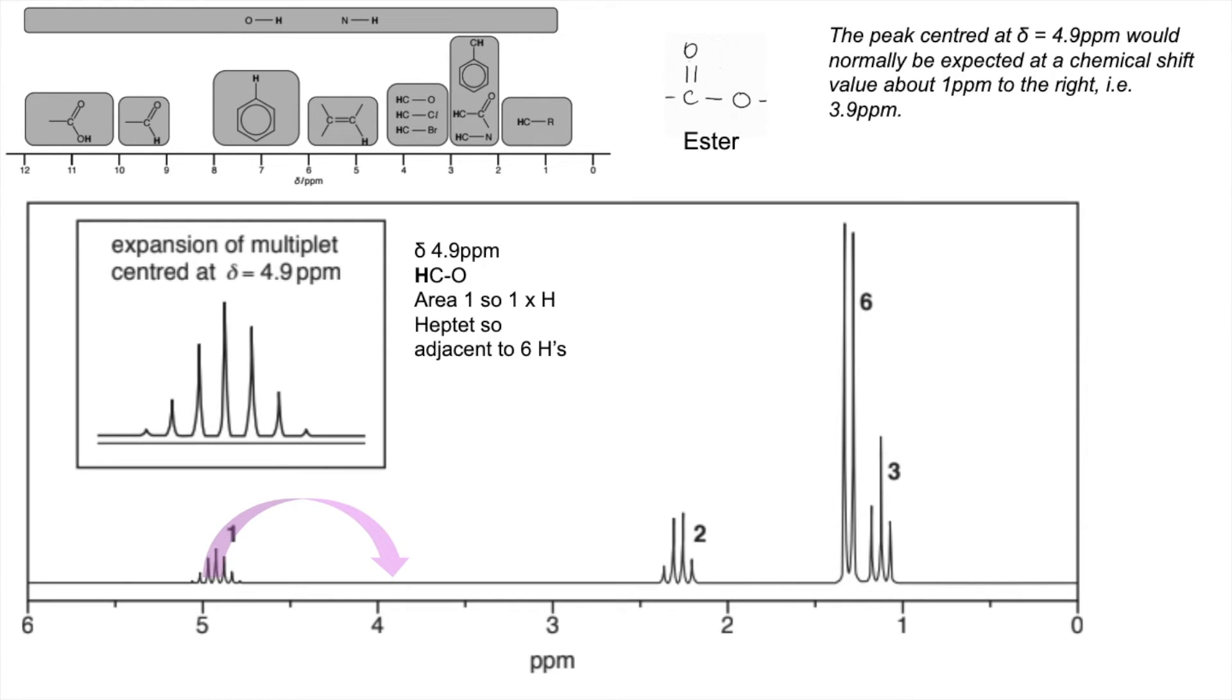But the splitting pattern is a heptate, a signal of 7 peaks. Therefore it must be adjacent to 6 H's. Obviously, the only way you can get those 6 H's is to have two equivalent CH3 groups. So that little part of the molecule must look like that.